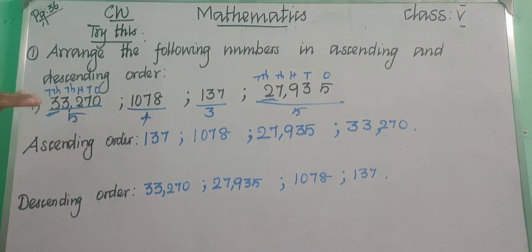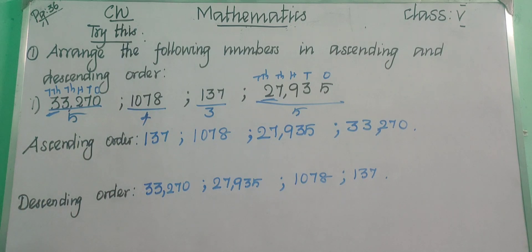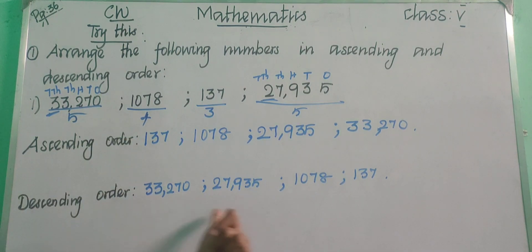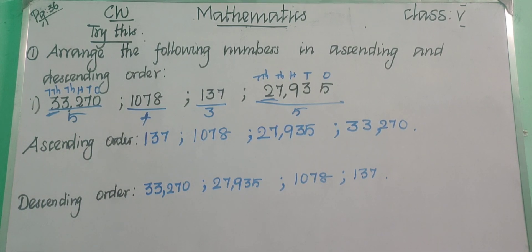If a number is given and you are asked to write both ascending and descending order, once you find one order, the other order is simply the reverse of that. Copy this in your classwork notebook — pause the video and write.